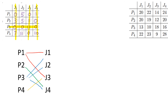Person 3 is the only person that can do job 2, so they must be allocated to that job — there's only one line going to that job. So person 3 must do job 2. Then, person 1 and person 3 are the only people that can do job 1, but since person 3 is already allocated to job 2, that leaves person 1 as the only person to do job 1. So person 1 must be allocated to job 1.